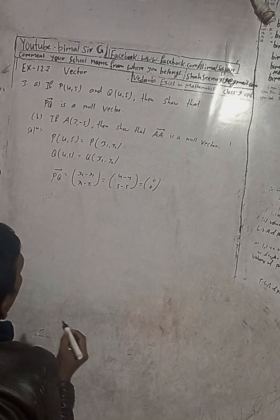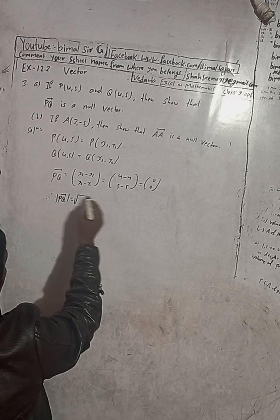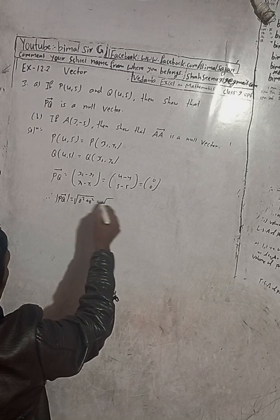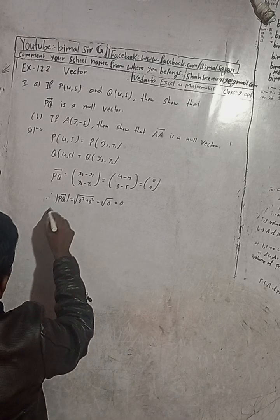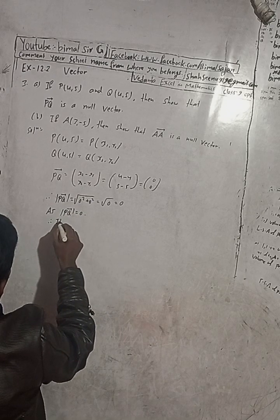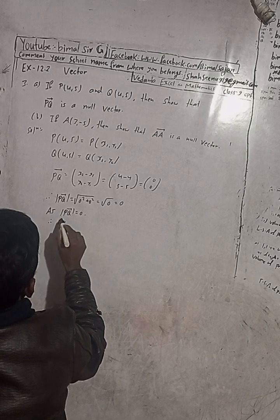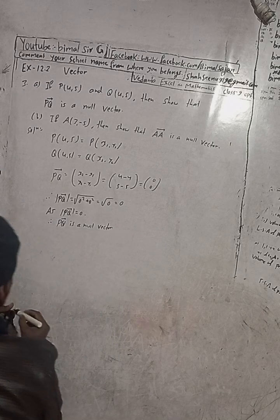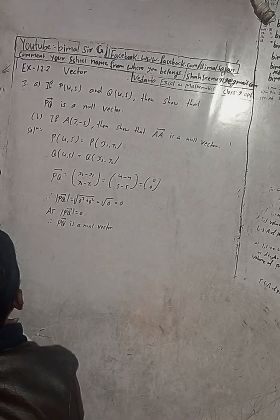Therefore, we have to prove it is a null vector. For the null vector we calculate the modulus of PQ vector. Modulus of PQ vector equals the square root of (0 squared plus 0 squared), which equals the square root of 0, equal to zero. Therefore, as the modulus of PQ vector is equal to zero, PQ vector is a null vector.